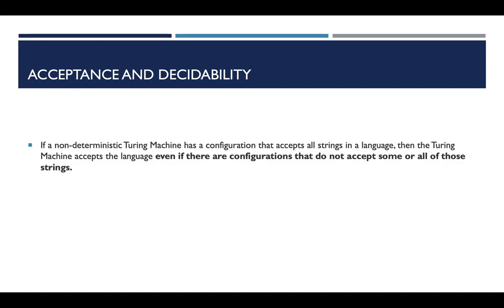To make the concept of acceptance and decidability fairly rigorous, we say a non-deterministic Turing machine accepts a language if and only if there is a single path that is capable of accepting those strings. So potentially there are going to be a number of configurations that do not accept some or all of those strings, and that's entirely fine. As long as there is an accepting path for each string in the language, we say that the Turing machine actually accepts that language.